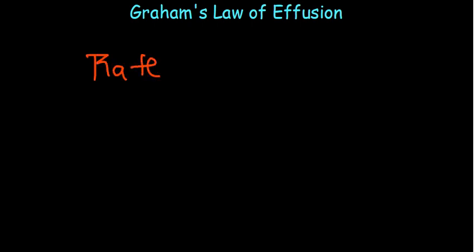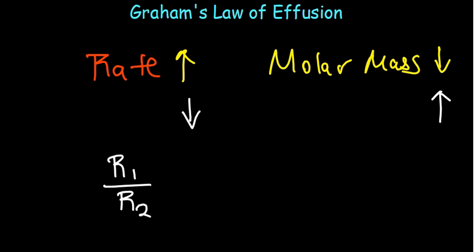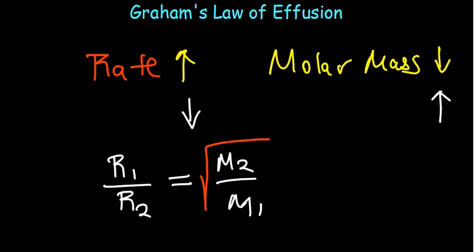Graham's law of effusion tells us that if you compare the rate of effusion of a gas against its molar mass, you observe that when you reduce the molar mass, the rate increases. When you increase the molar mass, the rate reduces. So there is inverse proportionality between the two. Comparing two rates of effusion of two gases, the rate of effusion of a gas is inversely proportional to the square root of its molar mass. That's exactly what Graham's law of effusion states.